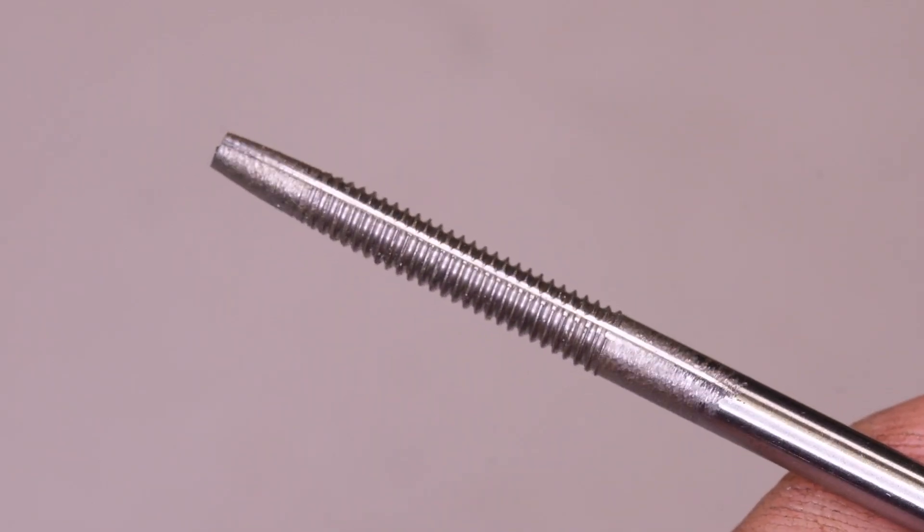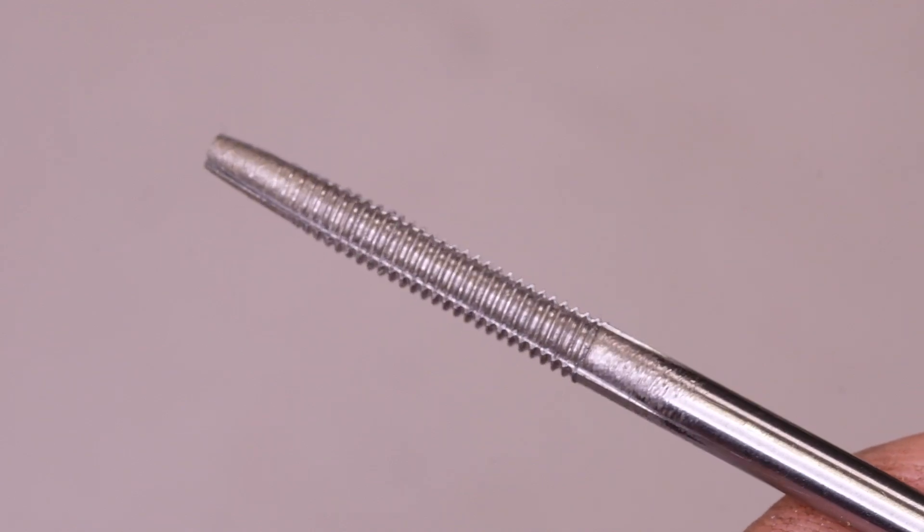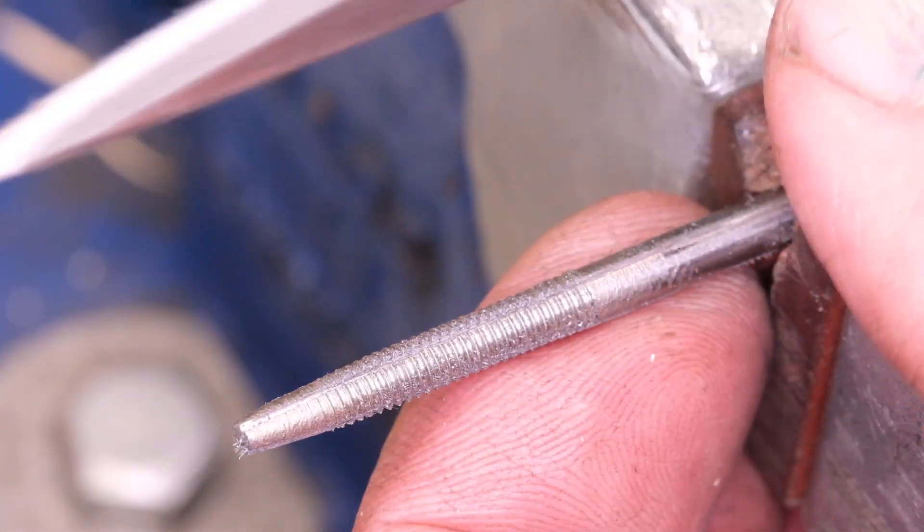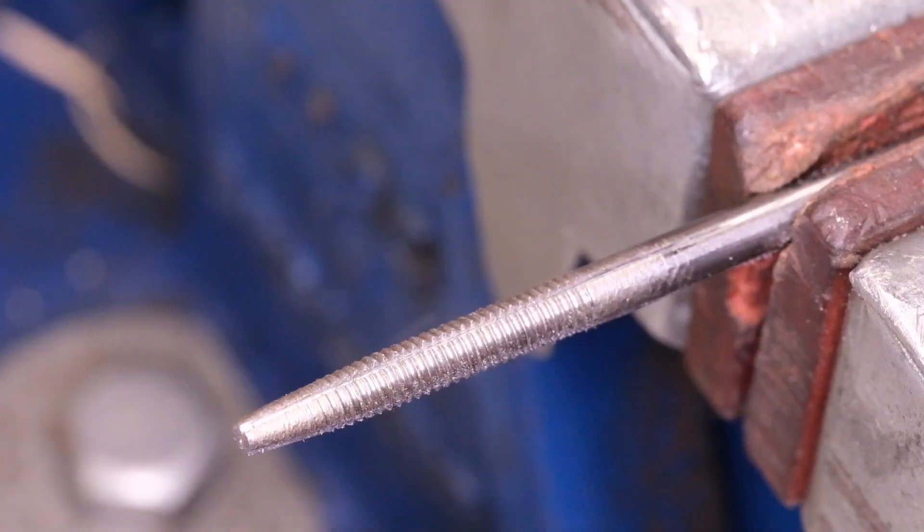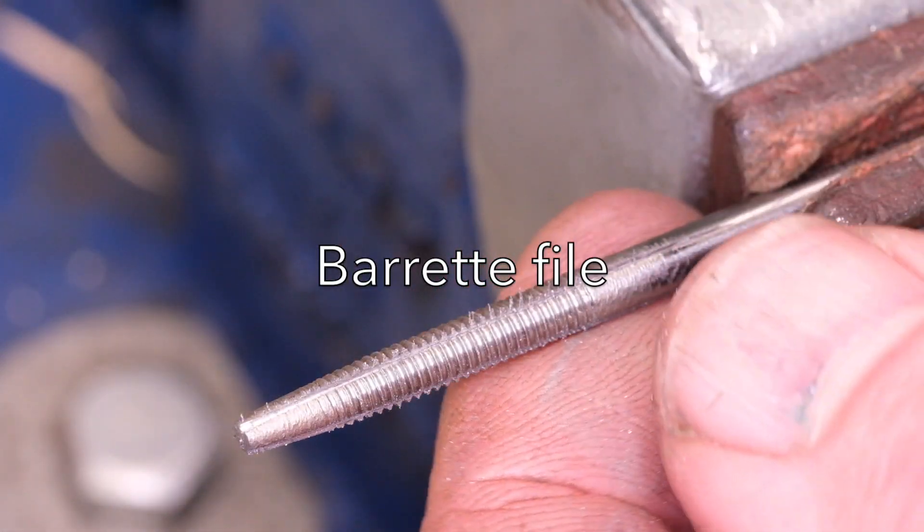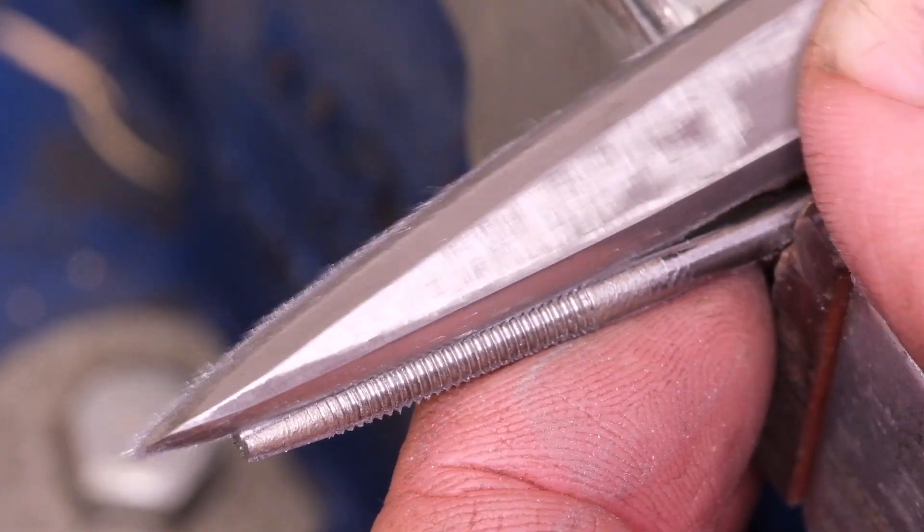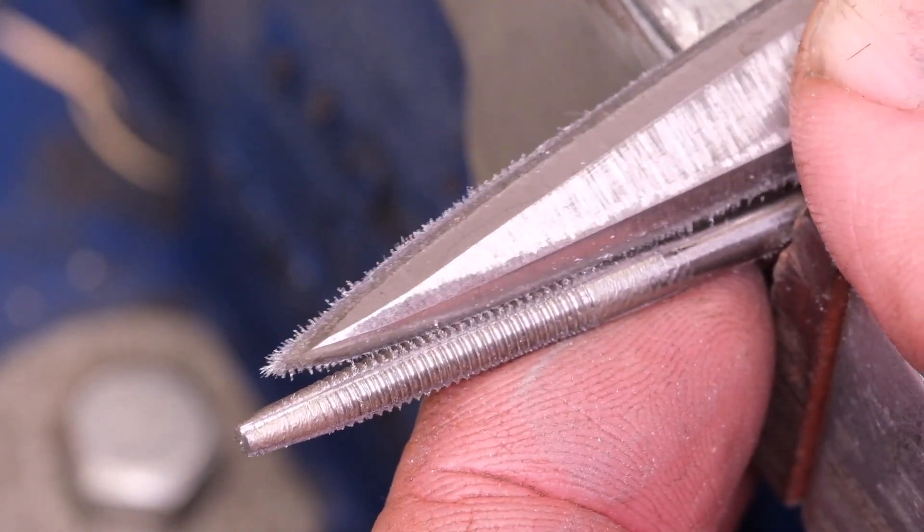Once I've done that then I want to actually cut some relief making sure the tap is cutting in the correct direction, right hand thread. So I just cut the relief with a barrette file to file away some material on the non-working side of the little flute that we've made.